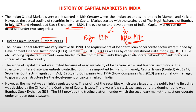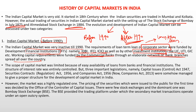Other investment institutions like LIC (Life Insurance Corporation), UTI (Unit Trust of India), and GIC (General Insurance Corporation) also provided funds. So there were two sources for corporate sector loans: financial institutions and investment institutions. Working capital was provided by commercial banks through their nationwide branch network. There were thus two types of loans: long-term loans and working capital loans. The scope of the capital market was limited because of easy availability of loans from banks and financial institutions.